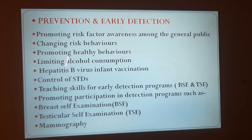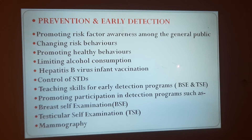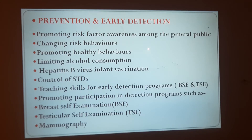Primary prevention also involves promoting risk factor awareness — bringing to the community how dangerous this disease is. Cancer begins because of risk factors: environmental, internal, external, and occupational factors. When occupations involve exposure to chemicals or radiation, these all become risk factors for the disease. As a nurse, you will be creating awareness among people about these risks.